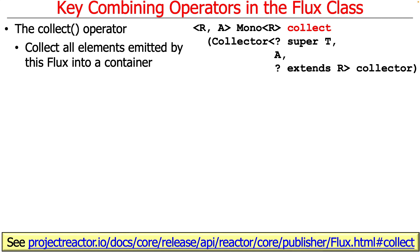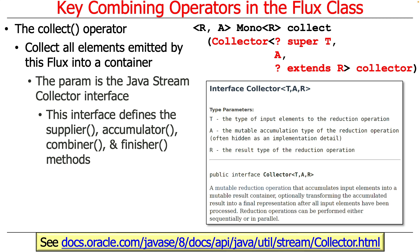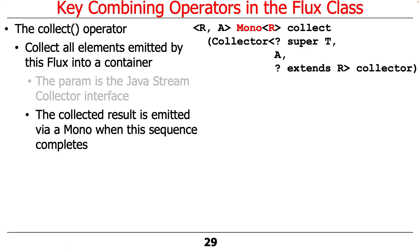The final operator we're going to talk about is collect, which is essentially a generalization of collect list but can work on other data types besides lists. It collects all the elements emitted by the flux into some container, and you can designate what kind of container is used based on the collector you pass in. That collector comes straight out of Java Streams — so if you know Java Streams, you know what a collector is: a cool interface that defines factory methods like supplier, accumulator, combiner, and finisher. The collected result is emitted by a mono when the sequence completes, which is slightly different from Java Streams, which returns an object rather than a mono.